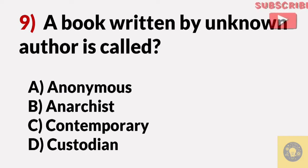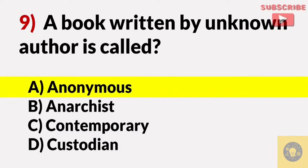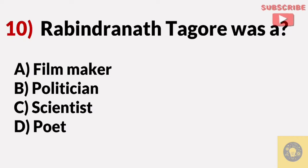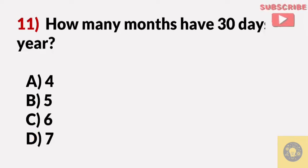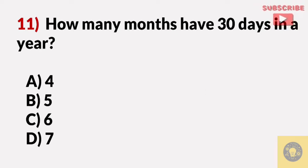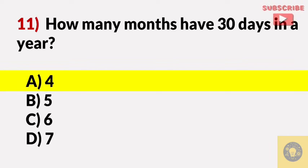A book written by an unknown author is called — Answer A, Anonymous. Rabindranath Tagore was — Answer D, a poet. How many months have thirty days in a year? Answer A, four.